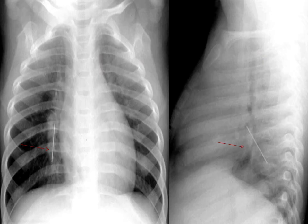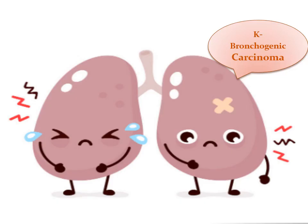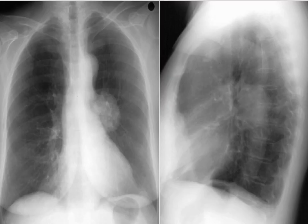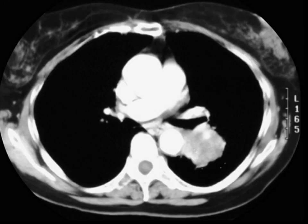Foreign body aspiration is more common in the pediatric age group. Some foreign bodies are radiolucent and can be detected indirectly on plain x-ray, for example in cases of foreign body aspiration where the pen or object is inhaled. Finally, bronchogenic carcinoma: the major risk factor is cigarette smoking, implicated in 90% of cases and associated with increased risk of lung cancer. Lesions can be central or peripheral.